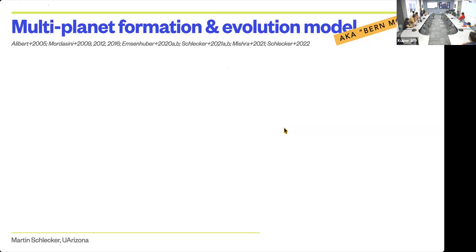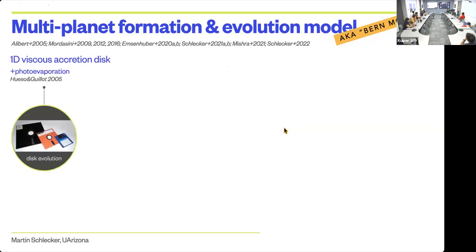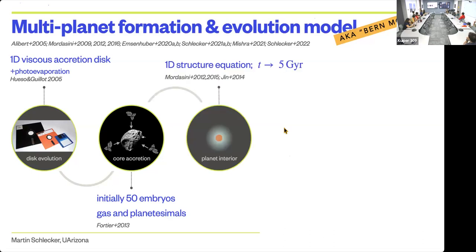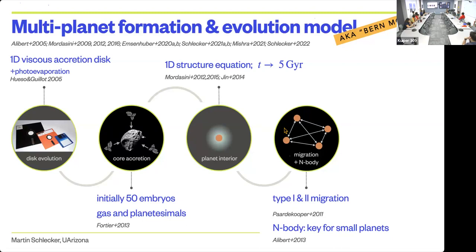A brief overview of what's included: we have evolution of a viscous accretion disk, including photo-evaporation—at some point the gas disappears due to irradiation from the host star and nearby giant stars. We have simultaneous planetesimal and gas accretion on up to 50 or 100 embryos, tracking what these planets accreted from their disk. We solve the interior structure equation, which is important for determining the gas accretion rate and final radii of gas giant planets. Orbit migration and N-body interaction are also included, as they define the final system architecture.